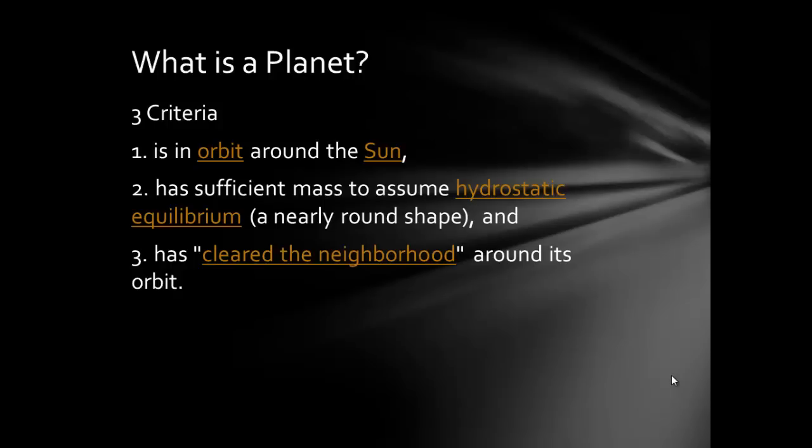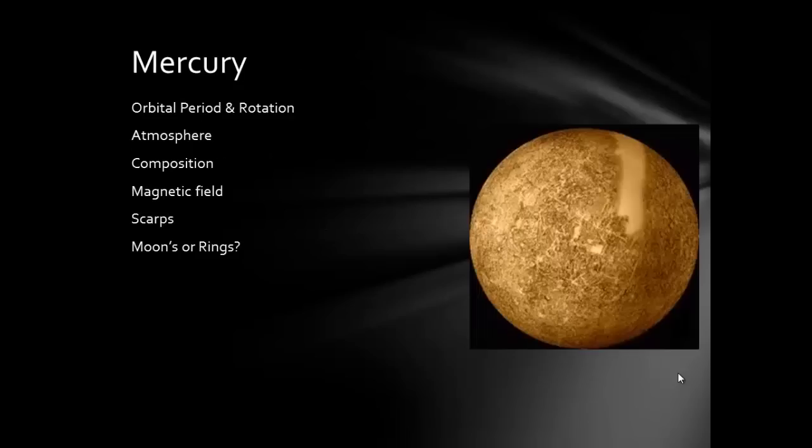So we're going to look at just the terrestrial planets here, those first four. I'm just going to kind of ramble off some stuff that you want to definitely put down about each planet. So first off, let's go with Mercury. Mercury is the first planet from the Sun, and that means, according to Kepler's laws, it has the shortest orbital period. It does it in 88 Earth days.